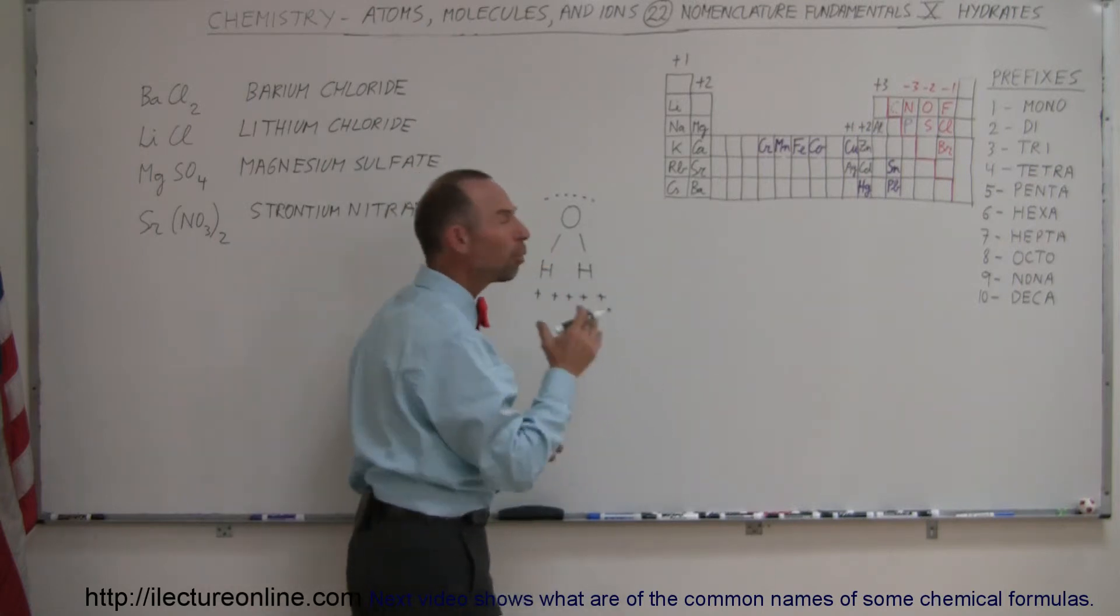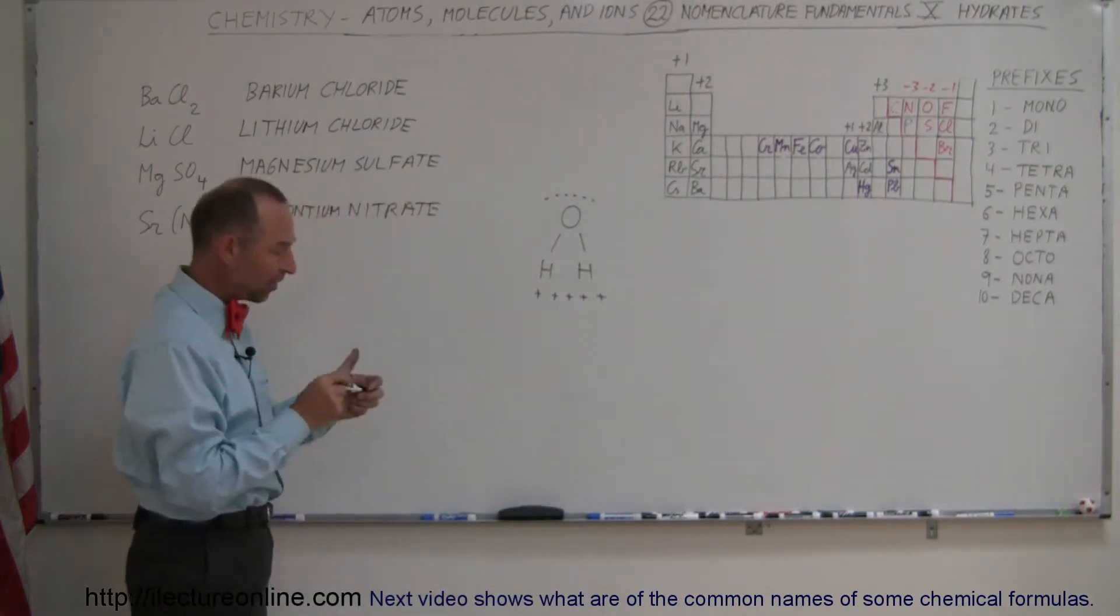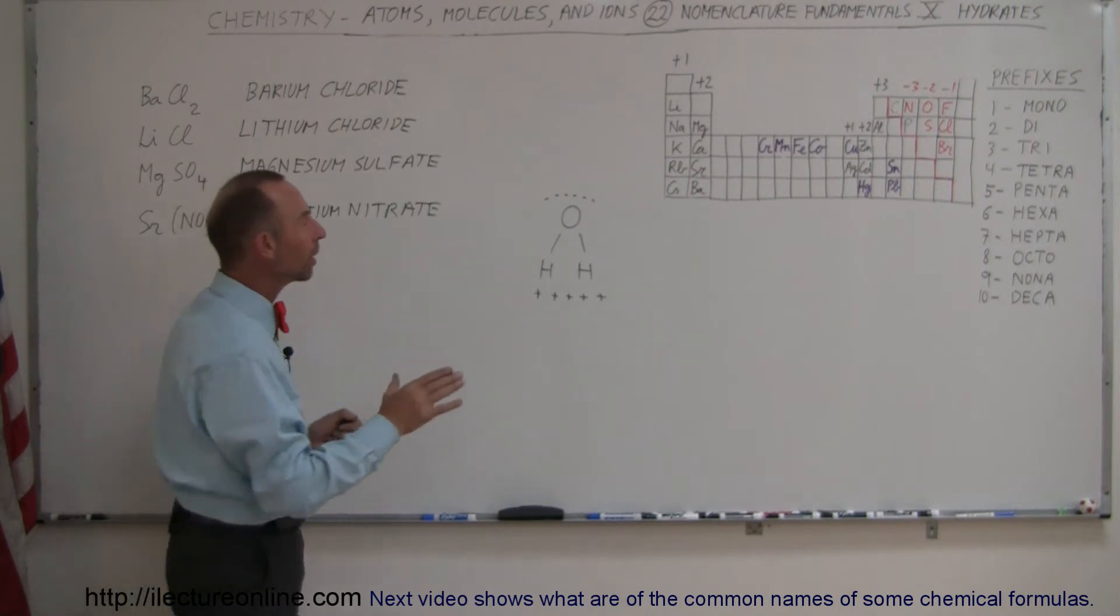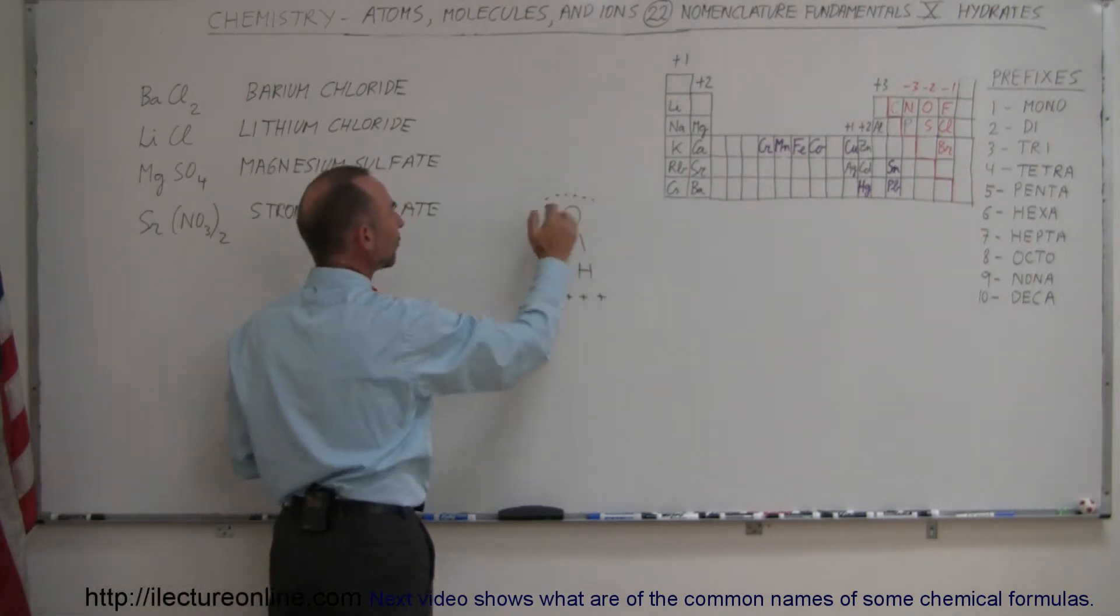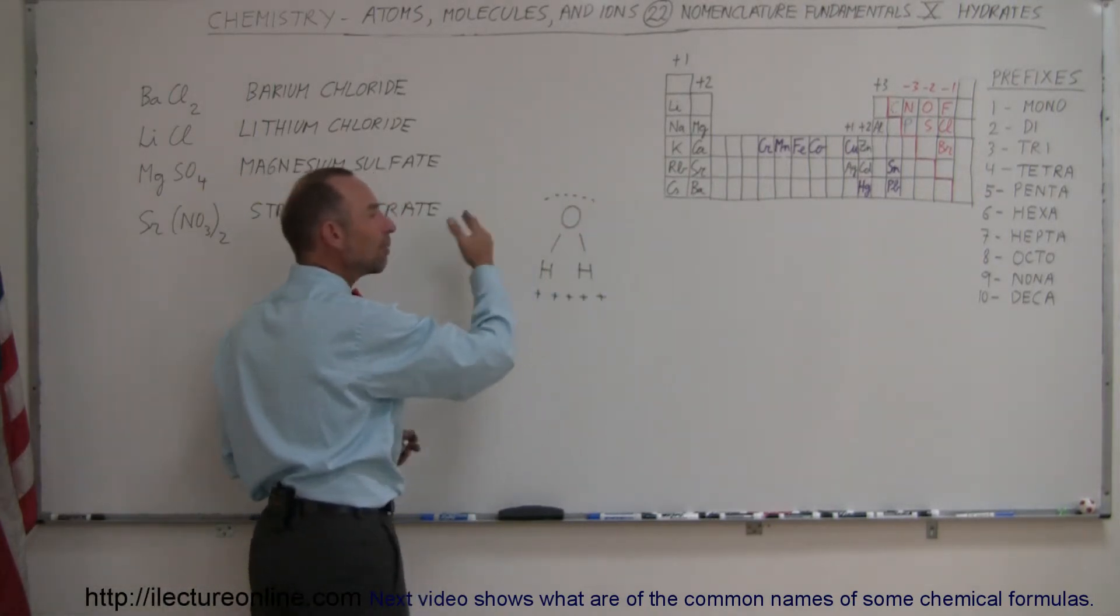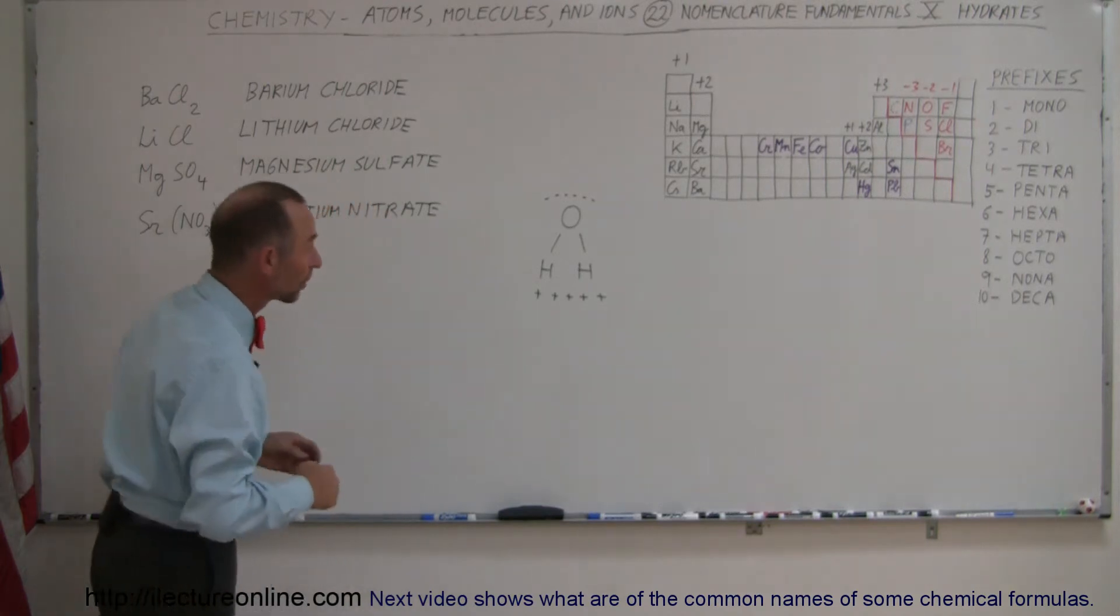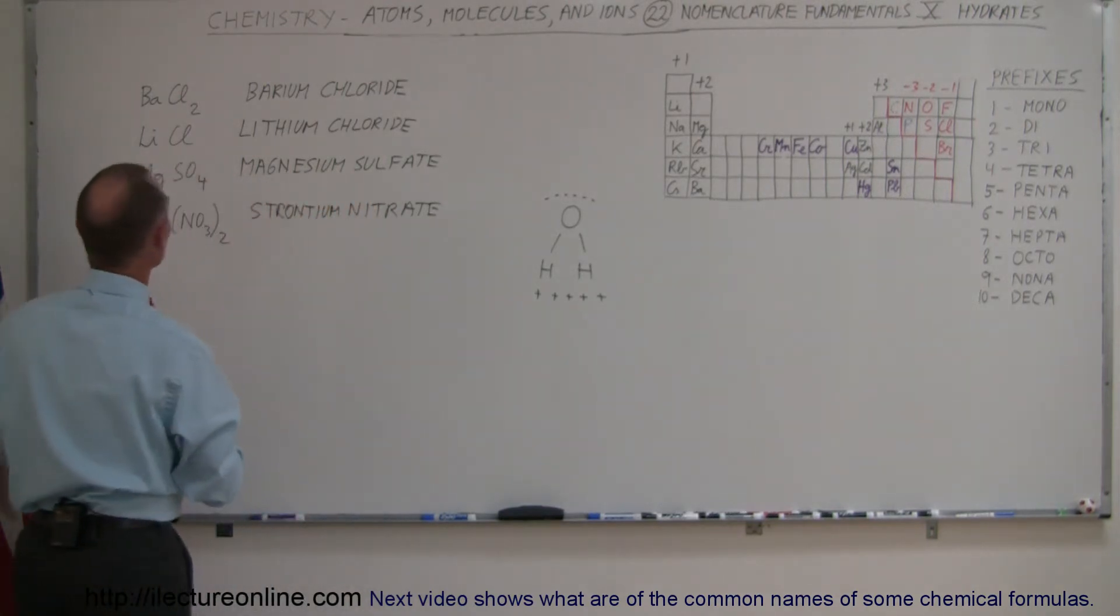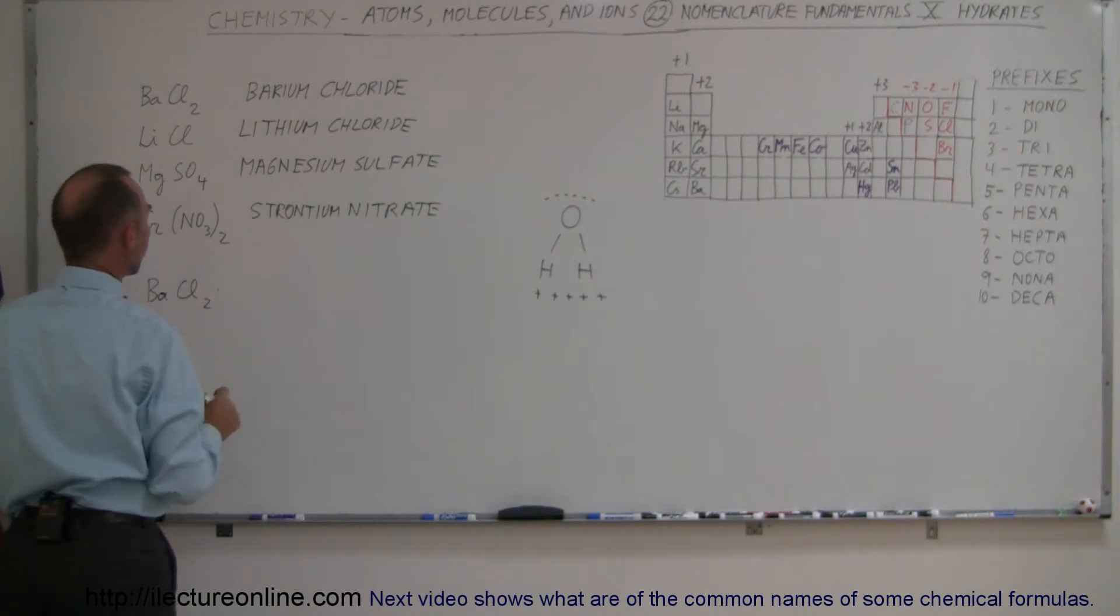So this is what we call a polar molecule. And because of that, it can make weak bonds between the negative or positive side and the negative and positive side of the water molecules. So because of that, for example, barium chloride can join with two of these hydrates.